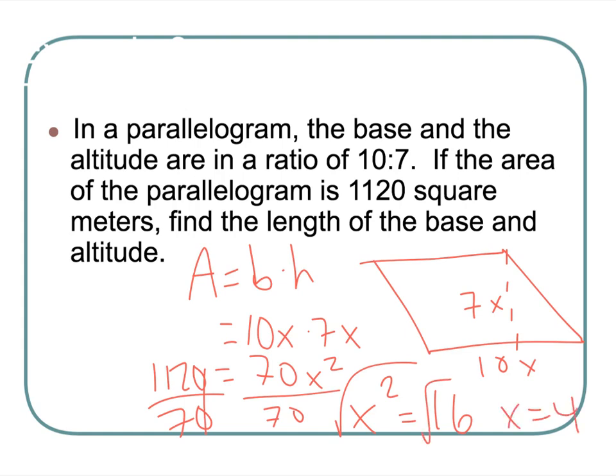To solve for x, square root, x equals 4. How wonderful to be a perfect square. It could be negative 4, but when it says find the length of the base and the altitude, we see it's 7x and 10x - obviously putting a negative in is going to give me a negative answer. So my altitude is 7 times 4 which is 28 meters, and my base is 10 times 4 which is 40 meters.